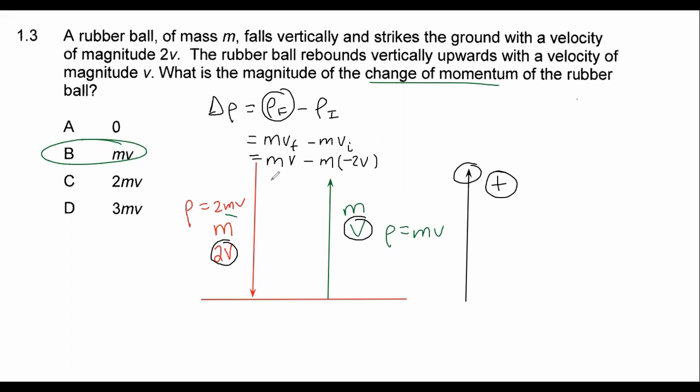And that is the part that a lot of you sometimes don't get correct. OK, and so if you had to go work this out now, you're going to get MV. And then it's going to end up becoming a plus, plus 2MV. And so the final answer is 3MV.